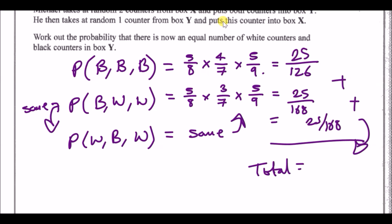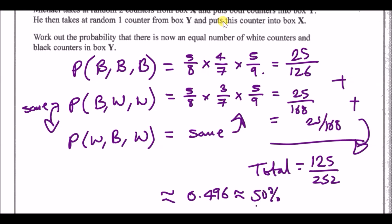Adding everything up gives a total probability of 125/252, which in decimal is approximately 0.496 — so roughly 50%. Ironically, you have about a half chance. That's the end of the paper.